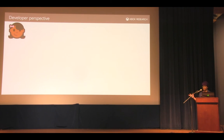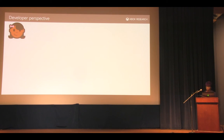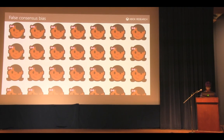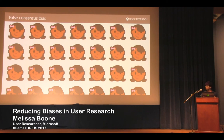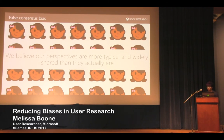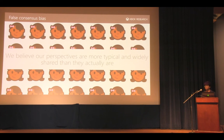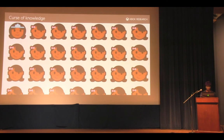Here's where we get back to that unbiased data. Game designers and other developers very much want to make a great game experience for their players. They have their own ideas about who those players are, how they play, and how to understand them. This is a framework we've found really useful for explaining the psychological principles behind bias and establishing common language with development team members. First is the false consensus bias, which leads us all to believe that our perspectives are more typical and widely shared than they are — it makes us assume that other people think just like us, or at least more like us than they actually do.